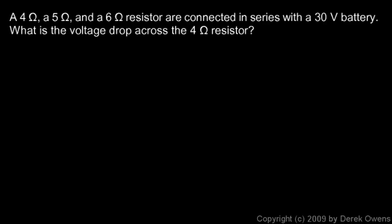In example number two, we're told a 4 ohm, a 5 ohm, and a 6 ohm resistor are connected in series with a 30 volt battery. What is the voltage drop across the 4 ohm resistor? Well, I'm going to draw a little picture. You don't have to, but I think diagrams always make things a little bit easier, because you can picture what's going on a little bit better. Let me move this down some here.